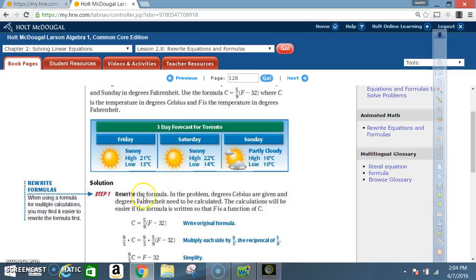Solution. Step 1. Rewrite the formula in the problem. Degrees Celsius are given and degrees Fahrenheit need to be calculated. The calculations will be easier if the formula is written so that F is a function of C. Currently, the formula is written where C is a function of F. Celsius depends on Fahrenheit. So we want to solve this in such a way that F is on this side and C is on that side.